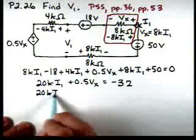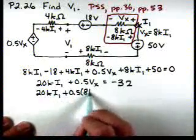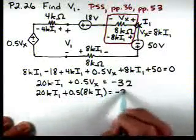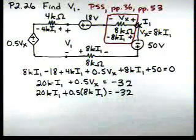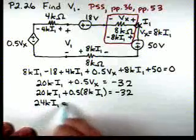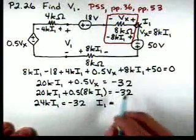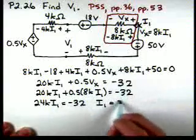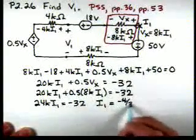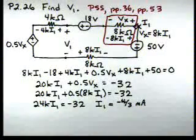So now if we make that substitution, we'll have 20Ki1 plus 0.5 times 8Ki1 is equal to minus 32. And that gives us 24Ki1 equal to minus 32. And I1 then is minus 4 thirds of a milliamp. So current's negative, which basically means that I should have picked the current clockwise.